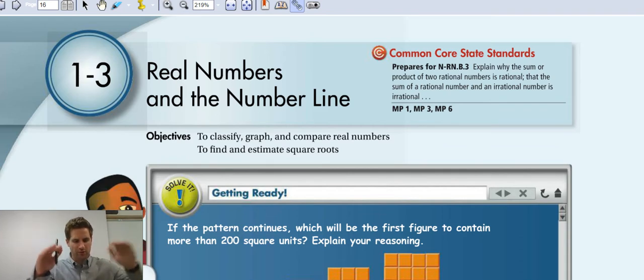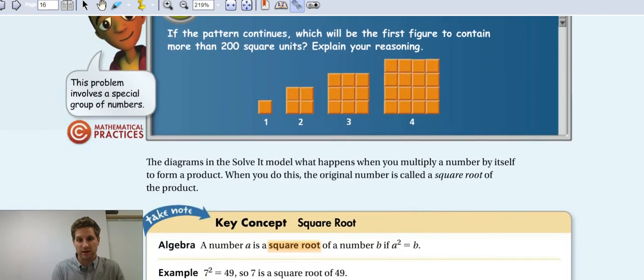At the very top, we're going to start with 1-3, do some vocab, do a couple examples in 1-4, so we'll try and keep it moving. So 1-3, real numbers and the number line, leave that at the top.